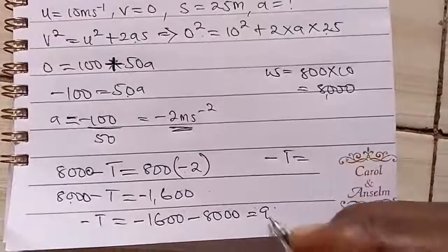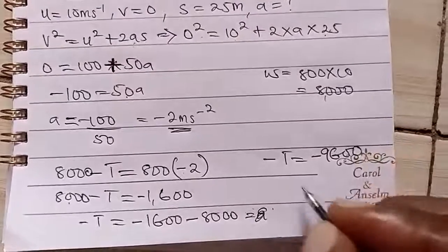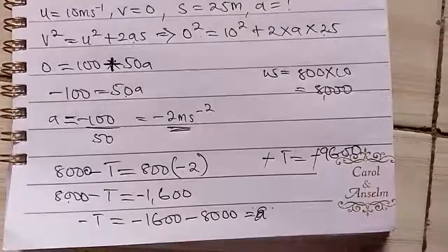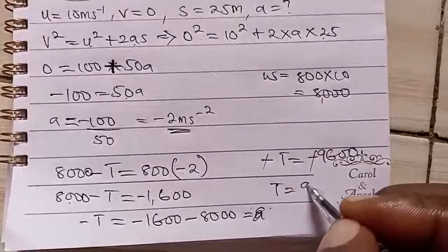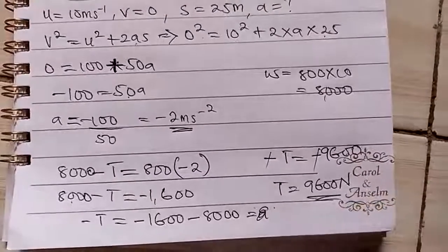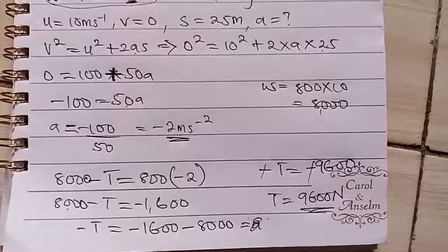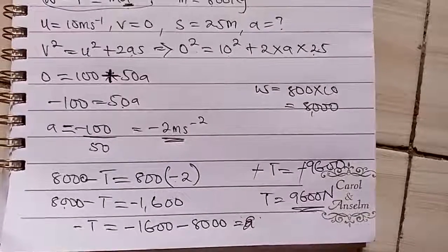So let's write it here. Minus 9,600. So minus cancels out minus. So our T tension is 9,600 newton. That's the answer. So please like the video. Click the subscribe button. Thank you.